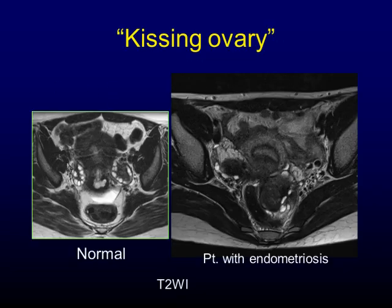Normally, bilateral ovaries are located beside the uterus. In patients with endometriosis, bilateral ovaries are retracted to the posterior uterus due to adhesion. The ovaries appearing in this way are called kissing ovaries.